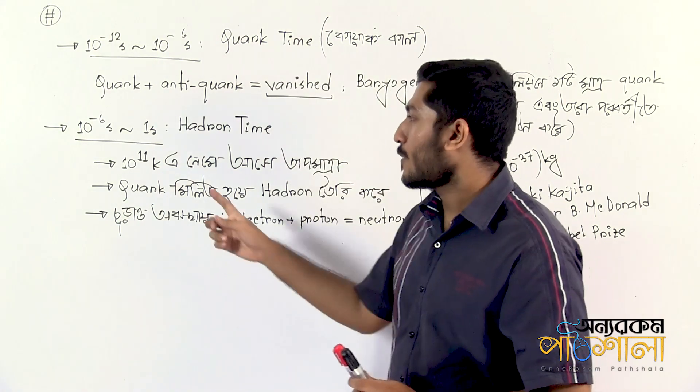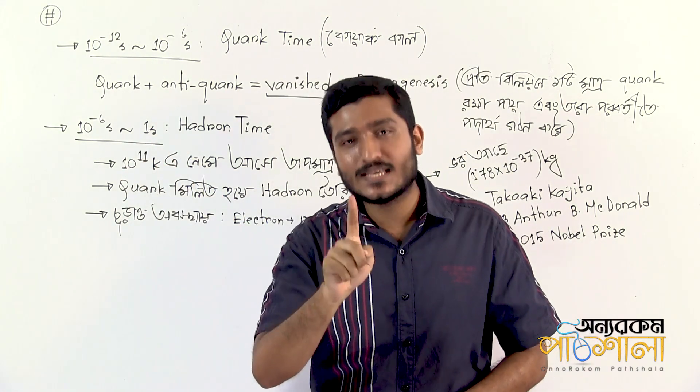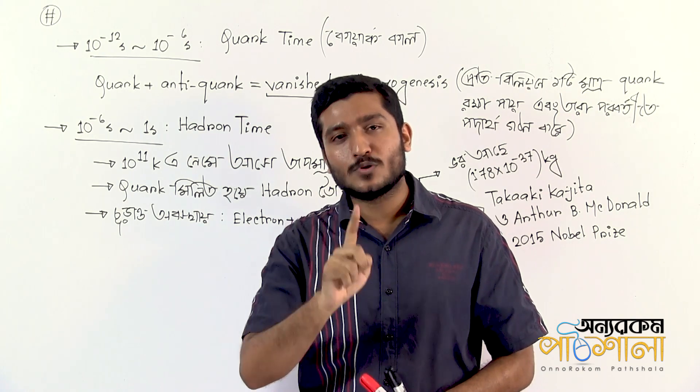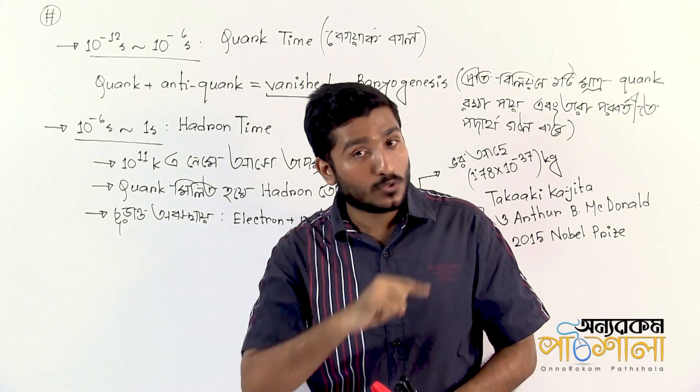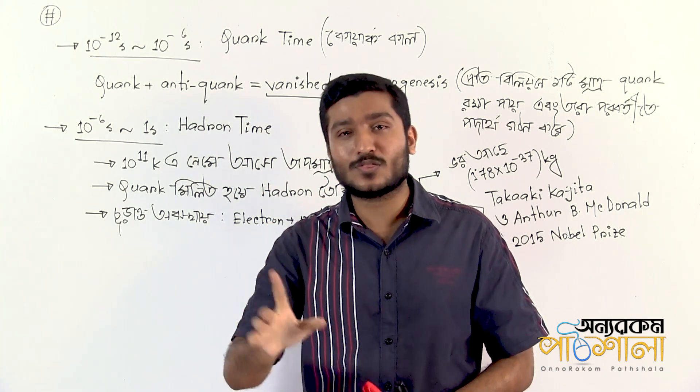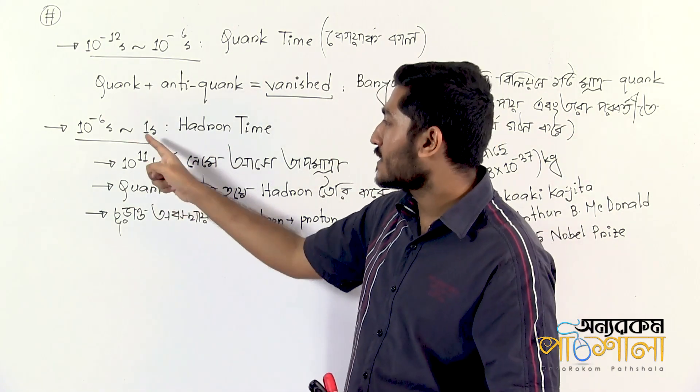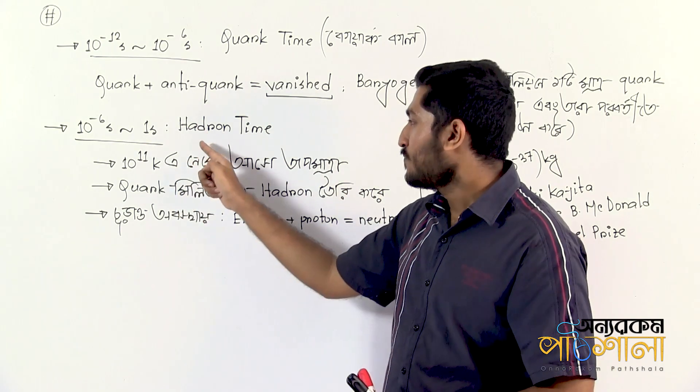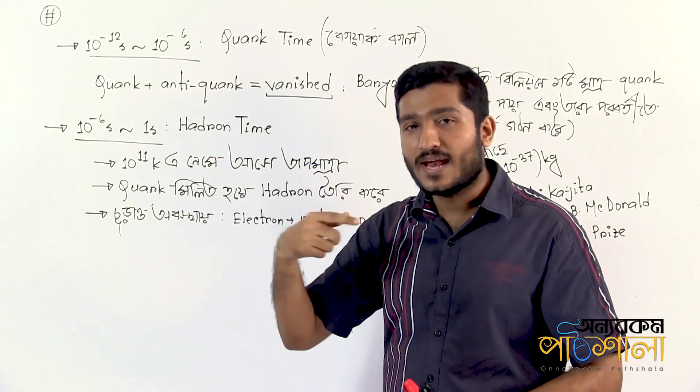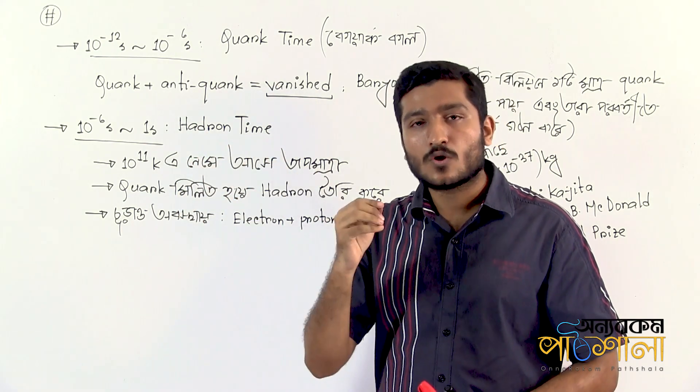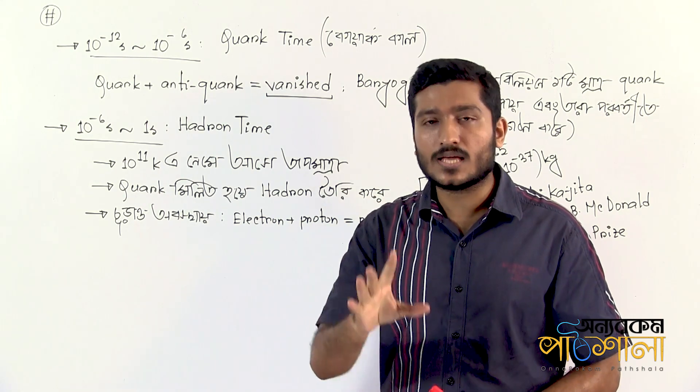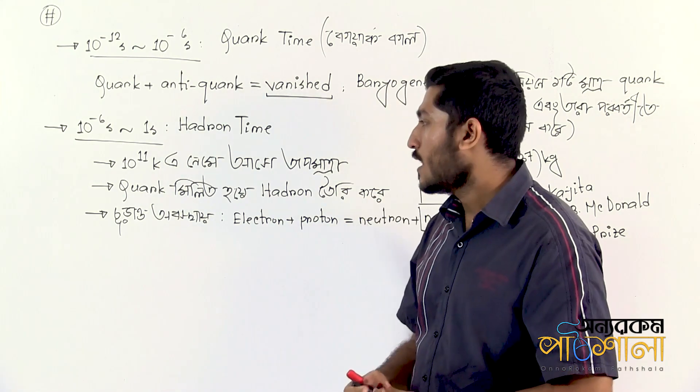At 10 to the power of 6 seconds, which equals 1 second after the Big Bang, we enter the hadron time or hadron era. Hadrons are composite particles made from quarks - including protons and neutrons. At this time, the temperature is around 10^11 Kelvin, and the quark-gluon plasma begins transitioning into hadrons.